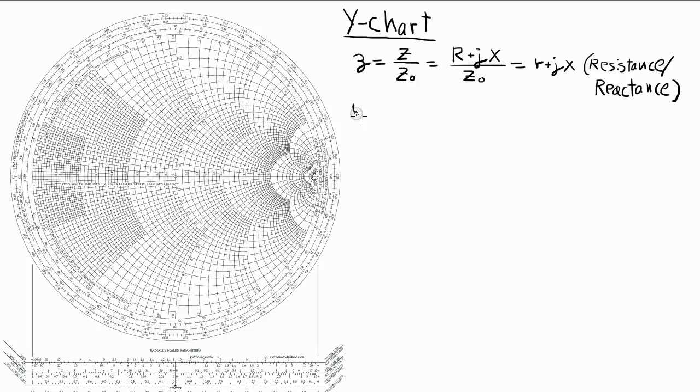Now let's see if we can do something very similar but use the admittance Y instead of impedance Z. So just like impedance, the admittance can be normalized.